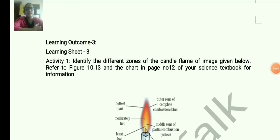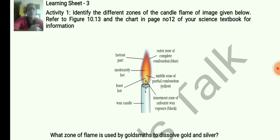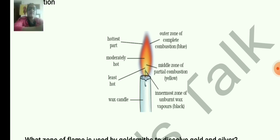Learning outcome 3, learning sheet 3, activity 1: identify the different zones of the candle flame of the image given below. Refer to figure 10.13. So this is from the textbook. We can see the wax candle here. The innermost zone of unburnt wax vapors is the least hot. The middle zone of partial combustion shows the yellow flame — it is moderately hot. The outer zone of complete combustion shows the blue flame and it is the hottest part.